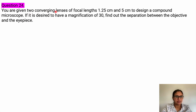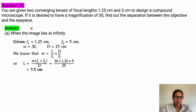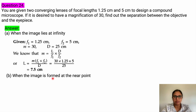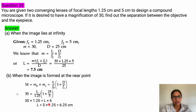Next question: you are given two converging lenses of focal length 1.25 and 5 centimeters to design a compound microscope. If a magnification of 30 is desired, find the separation between the objective and eyepiece. When the image is at infinity, calculating the values gives L equal to 7.5 centimeters. When the image is formed at the near point, substituting the magnification formula gives the distance between objective and eyepiece as 6.25 centimeters.